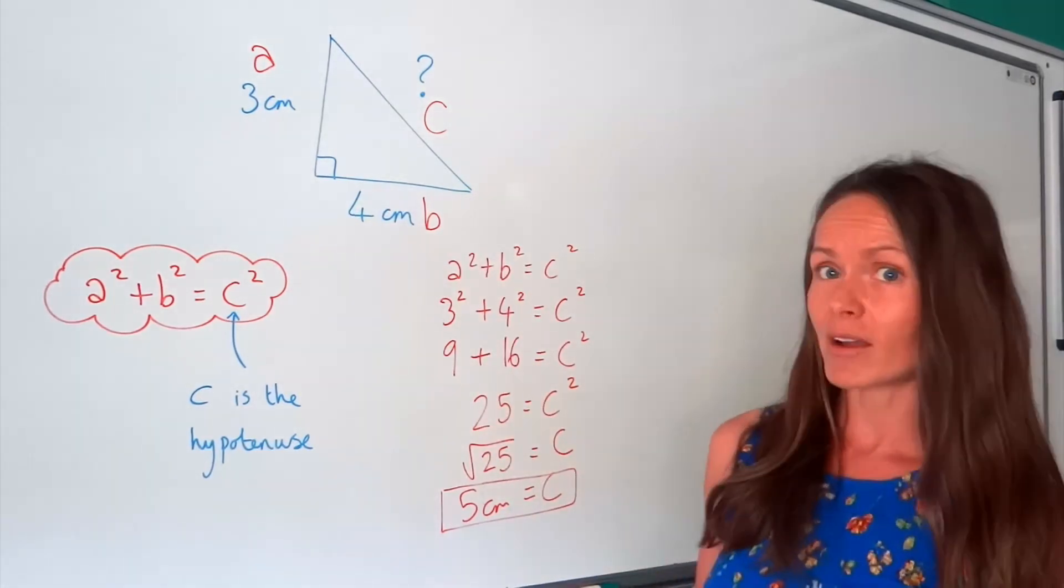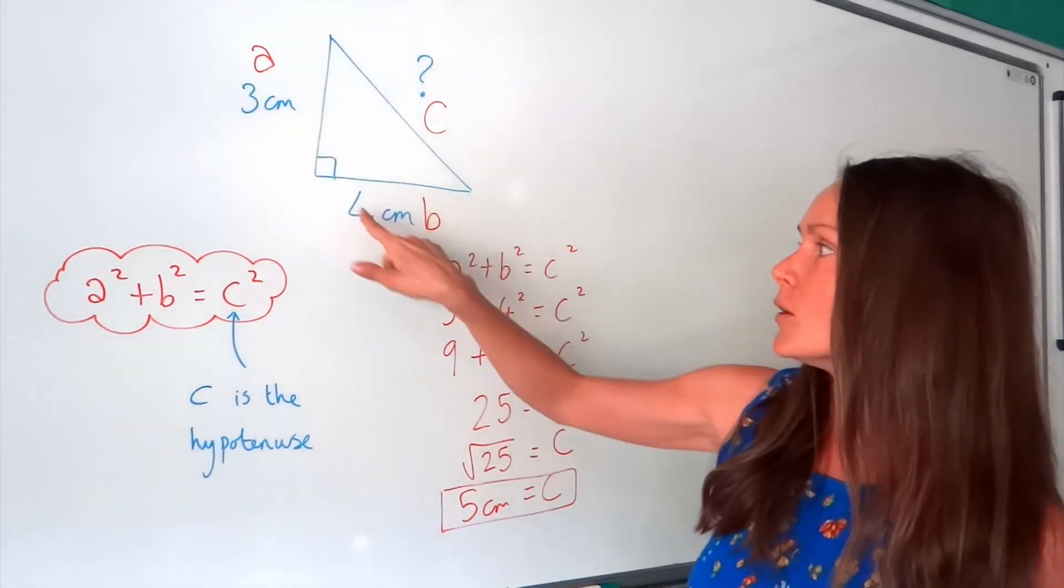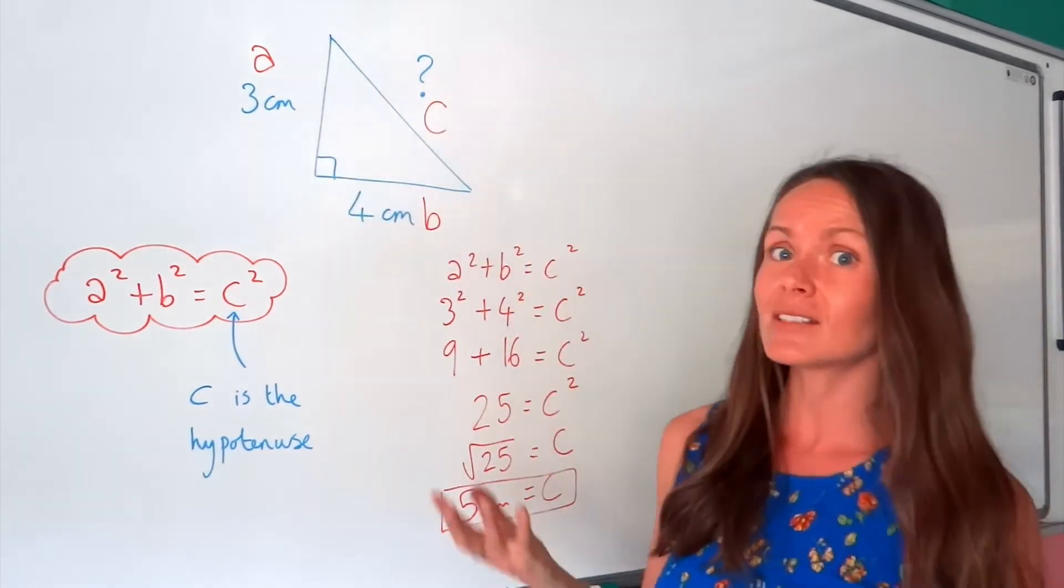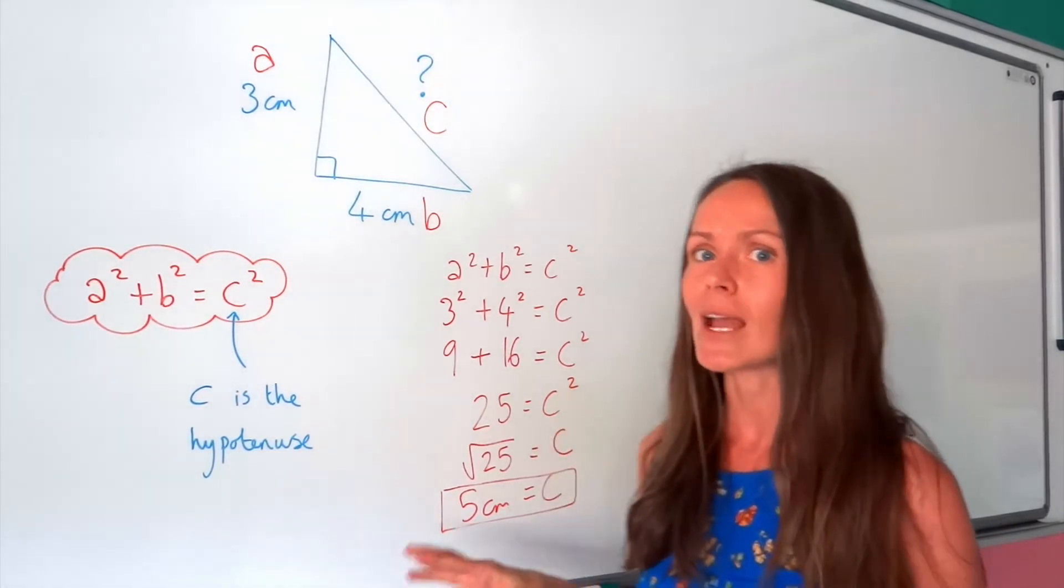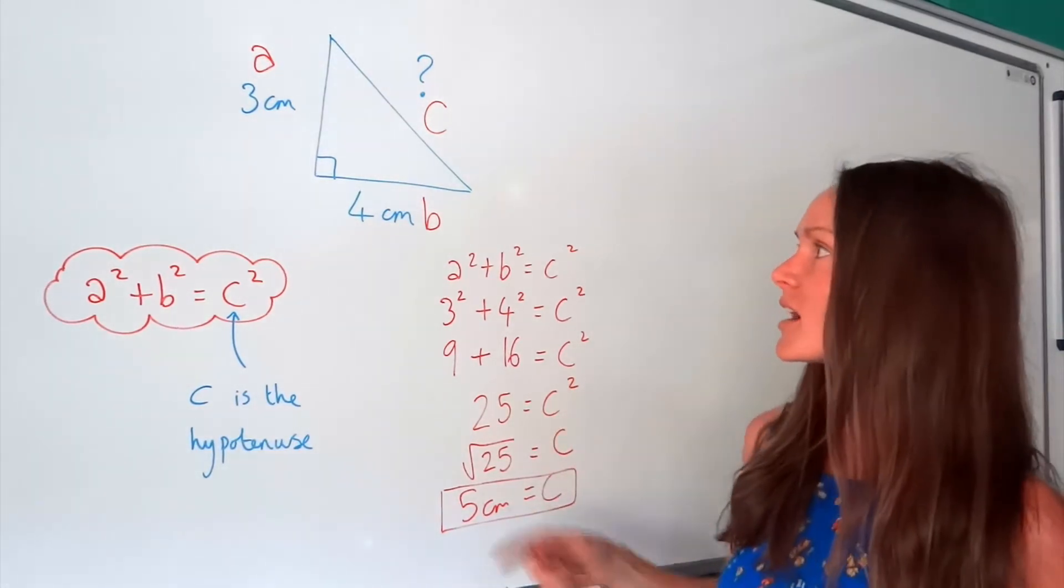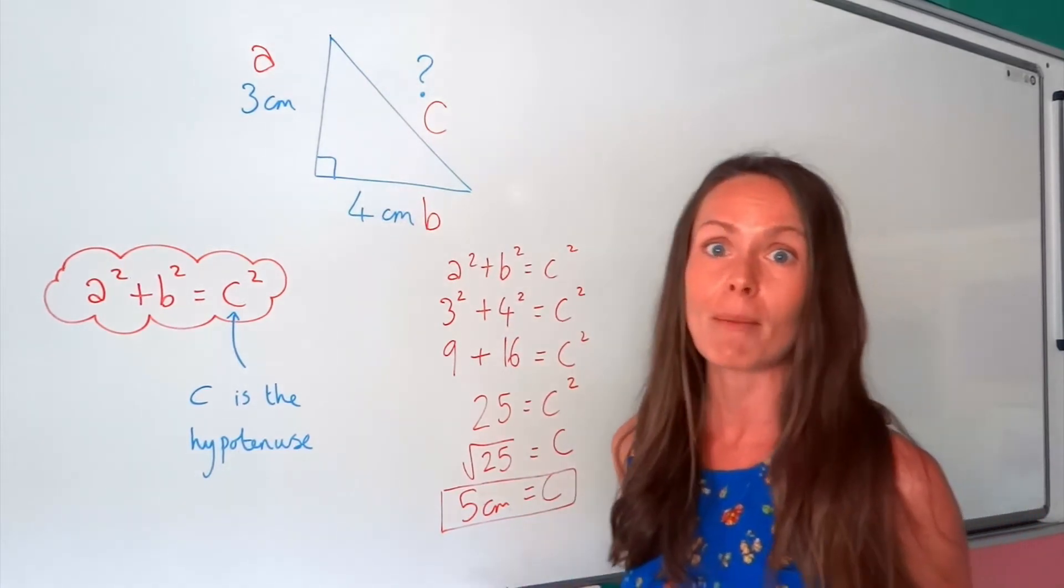Now notice, these are quite nice numbers. 3, 4, and 5. So this is a special triangle. A lot of the time, when you calculate these sides, you'll get lots of decimals. But this is a nice one, 3, 4, 5, and you might just remember this triangle.